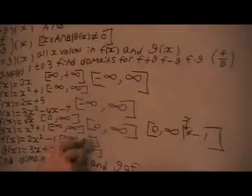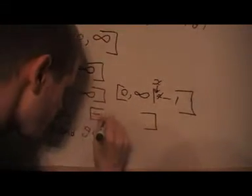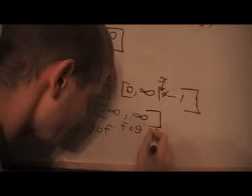So, these values, all these X values are allowed in both of these functions. So, that's going to be a domain. And that's for F of J and J of F.